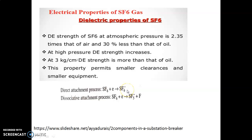When there is a fault in the system, the current-carrying contacts start separating and an arc strikes between them due to ionization of the surrounding medium. A huge number of electrons are generated due to the ionization process. When the SF6 gas molecules react with these free electrons, they form a negative immobile ion. The equation is: SF6 + e⁻ → SF6⁻.